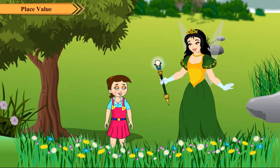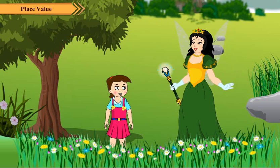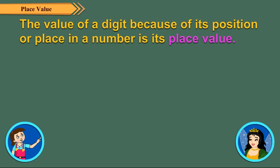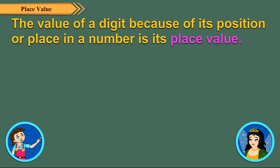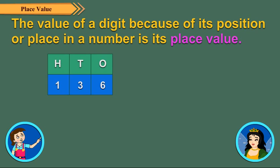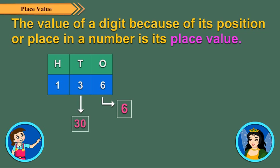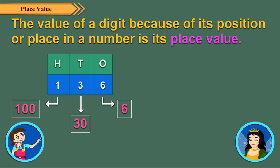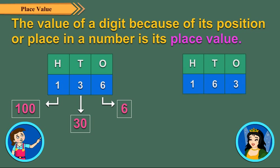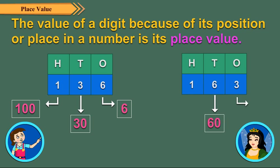I will explain the place value of a digit in a number. The value of a digit because of its position or place in a number is its place value. For example, in 136: 6 is at the ones place, so its place value is 6. 3 is at the tens place, so its place value is 30. Now observe how the place value of 6 and 3 vary in 163.